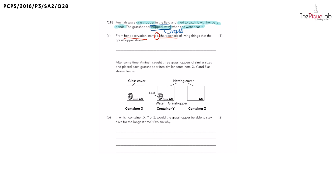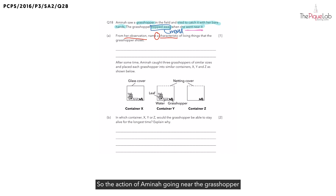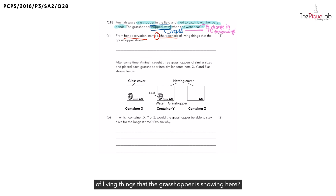Actually not. The main focus of the question is that the grasshopper hopped away when Amina went near it. So the action of Amina going near the grasshopper is a change in the grasshopper's surroundings. So can you think of the characteristic of living things that the grasshopper is showing here? It is about the grasshopper responding to changes.